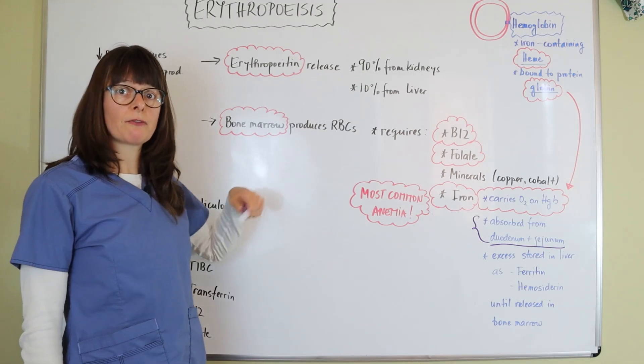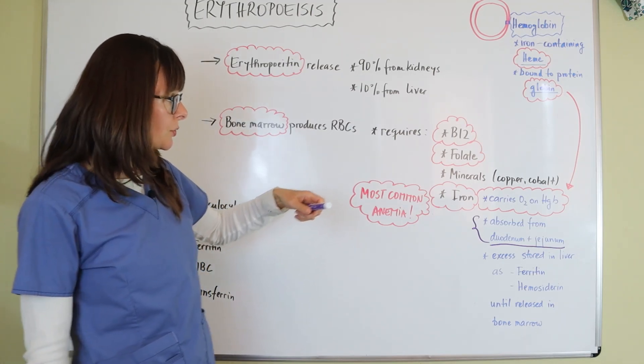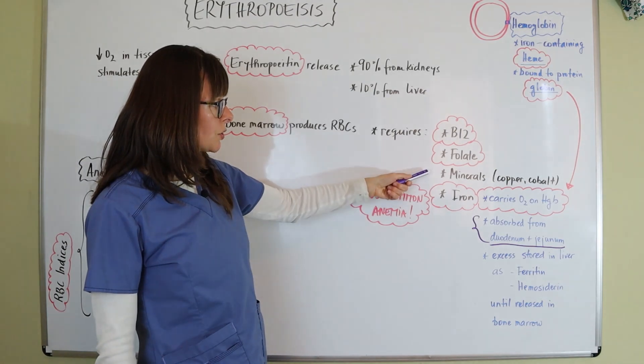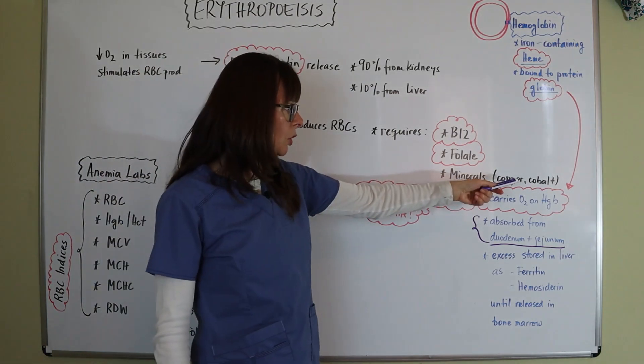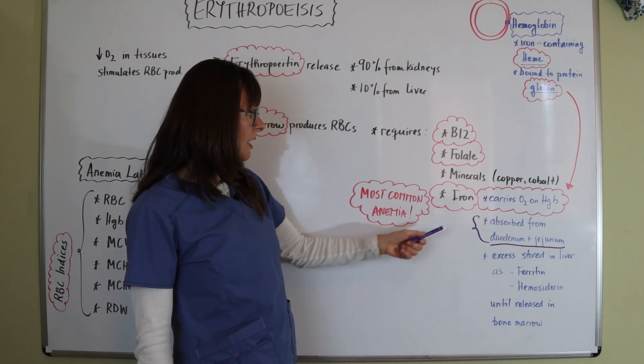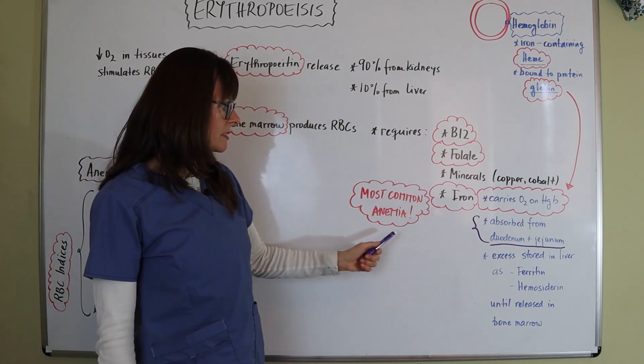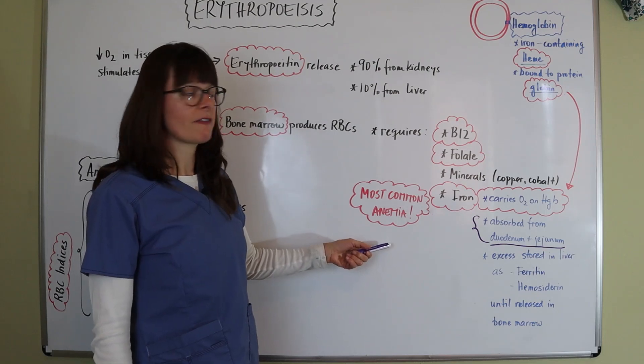But what's required for that production are certain things: B12, folate, certain minerals such as copper and cobalt, and also iron. And as you can see here, I wrote iron deficiency anemia is the most common anemia that we find.